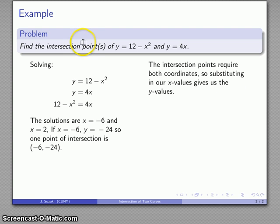So my intersection point, x-coordinate, y-coordinate, negative 6, negative 24.